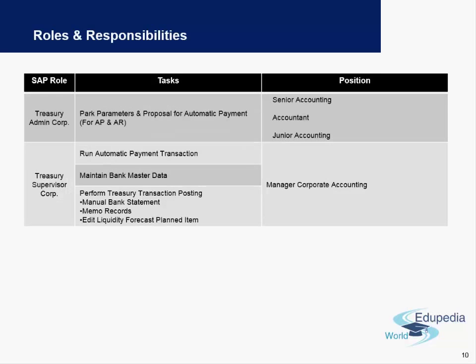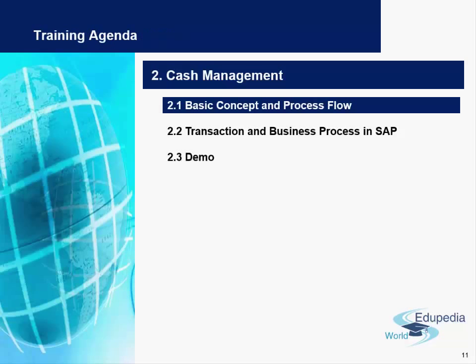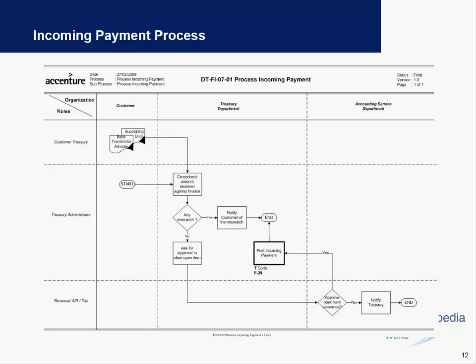We also have the corporate team, which again has two differentiations: an admin role and a supervisor role. Junior accountants have parking rights in the system, whereas superiors — either called senior accountants or supervisors — have the authority to maintain any master data as well as perform any posting-related roles in the system.